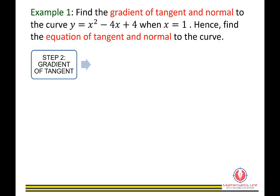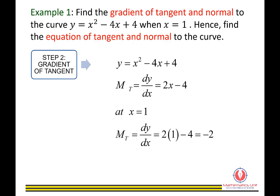Step 2: Find the gradient of tangent. Using the curve equation y equals x squared minus 4x plus 4, differentiate to get dy/dx equals 2x minus 4. Since x equals 1, substitute x equals 1 into dy/dx. You get the gradient of tangent equals negative 2.